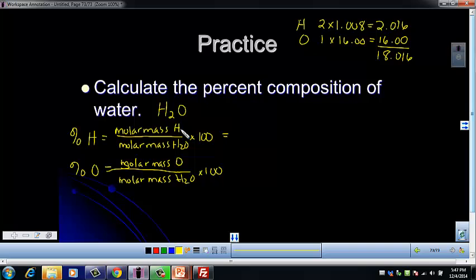So our molar mass of hydrogen. It's not the molar mass of one hydrogen. It's the molar mass of all the hydrogens in the compound. We've already done that step. So it's just going to be 2.016. And then divide it by our molar mass of water, which is 18.016. And then we're going to multiply that by 100. And when you do that, you end up with 11.19%.